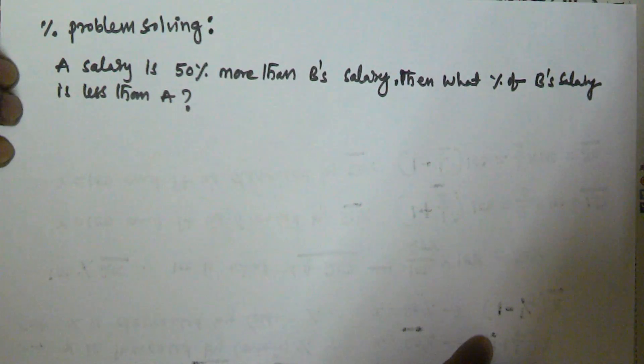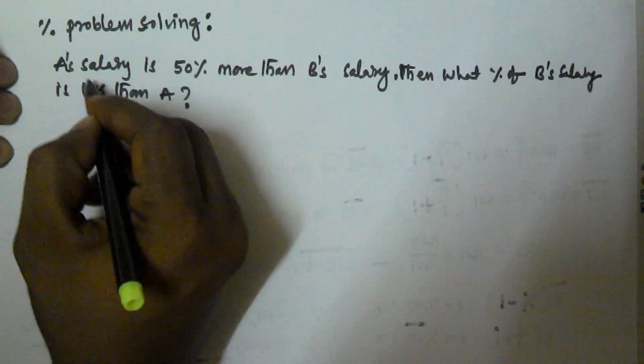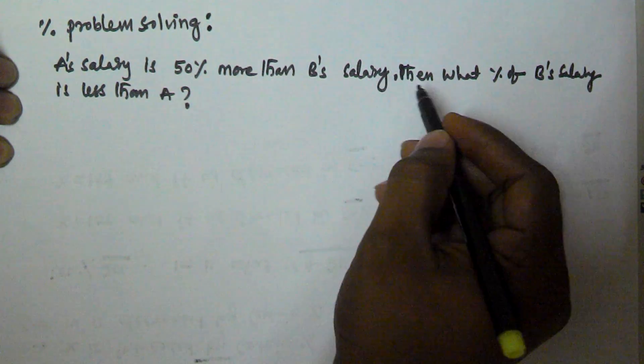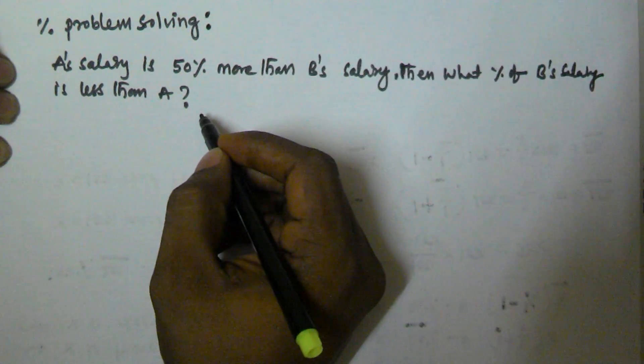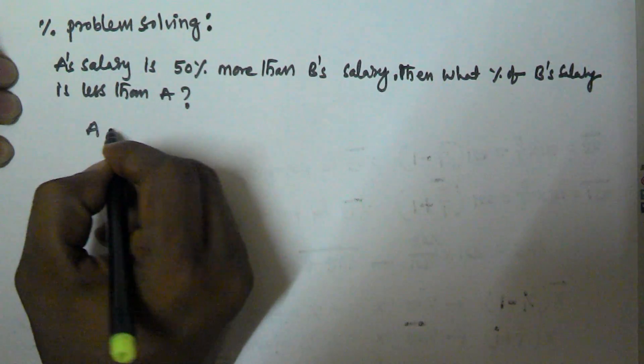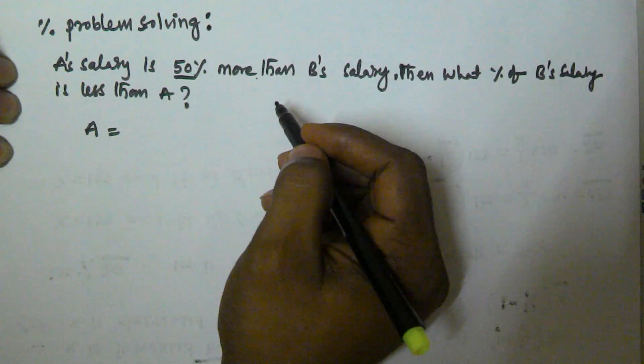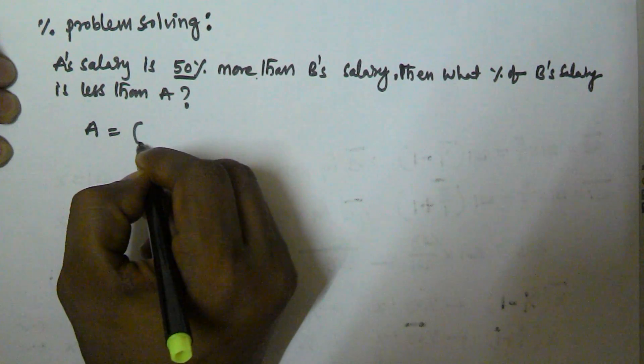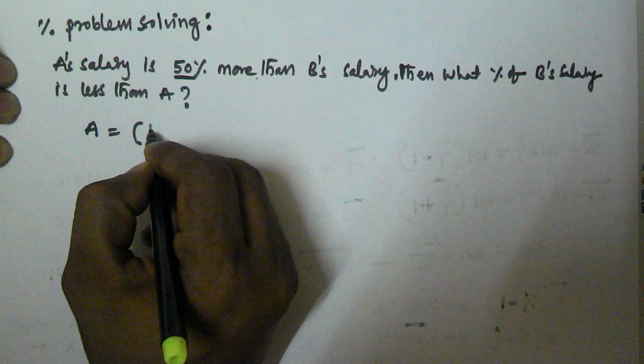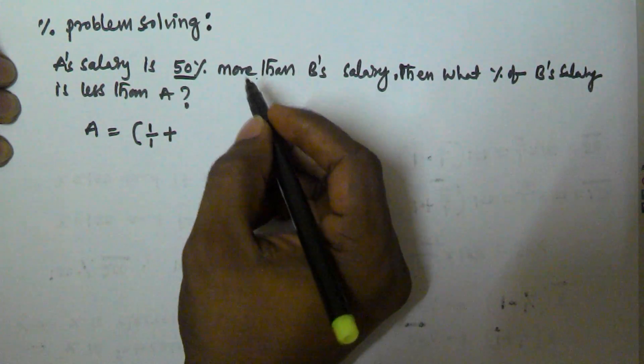So how to solve this question? A's salary is 50% more than B's salary. So let us take A's salary is 50% more than B's salary. That means we have to take 100% of B's salary - 100% is represented by the fraction 1 by 1, plus 50% more. So the fraction equivalent to 50% is 1 by 2 of B's salary.